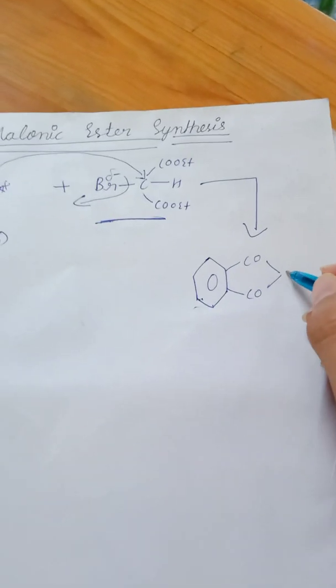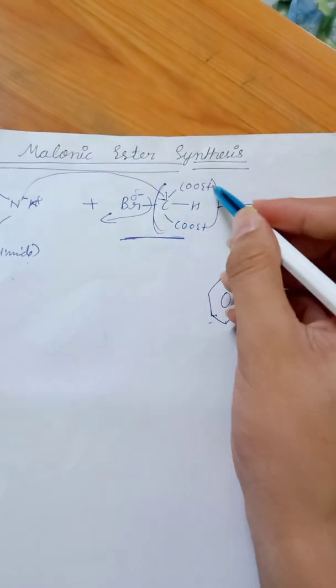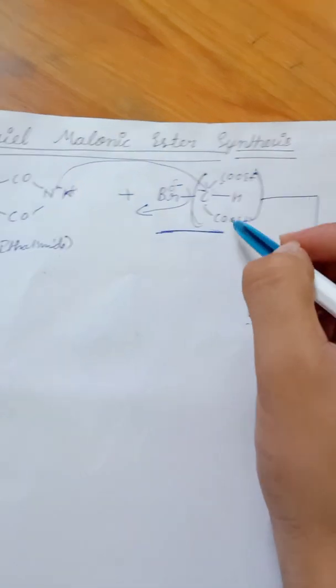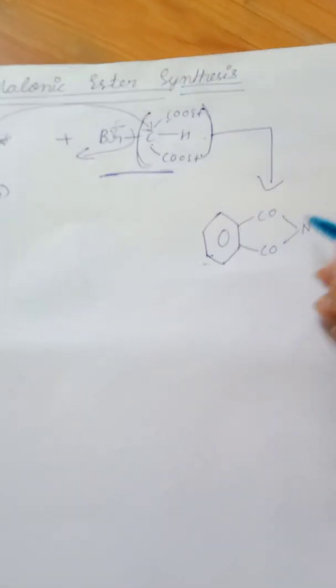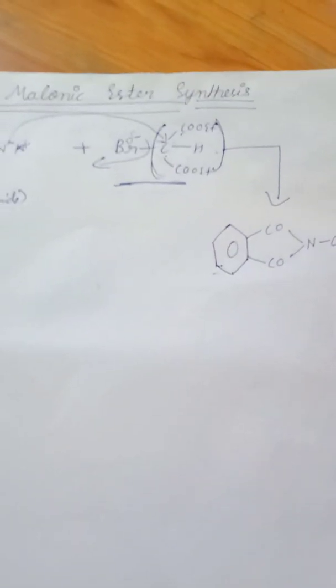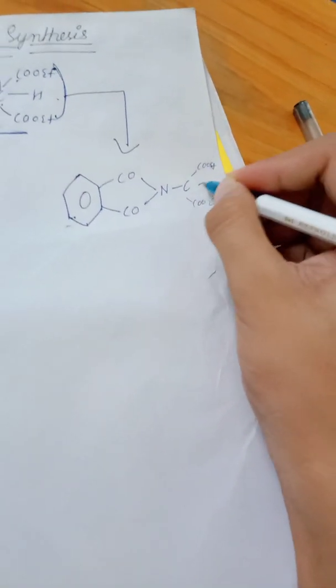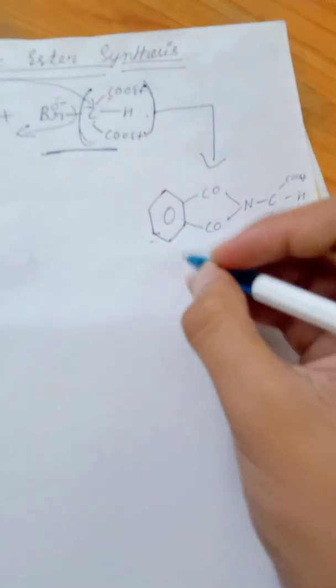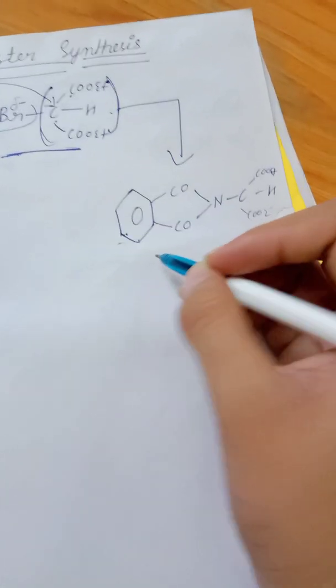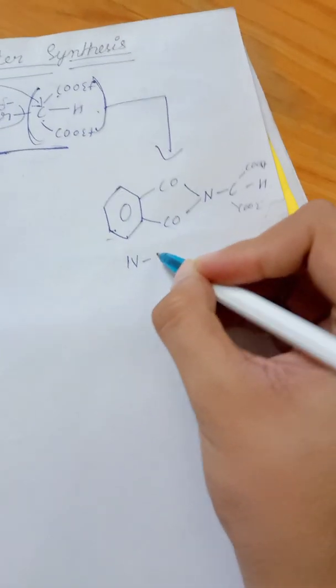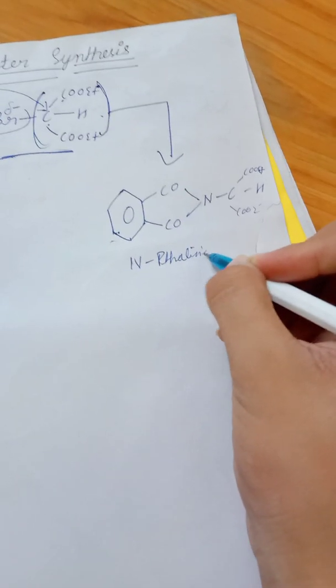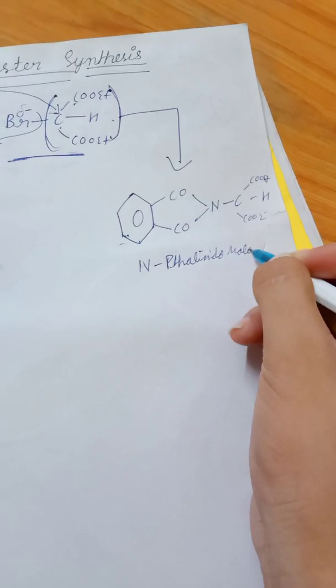Here what will happen is the remaining group, which is COOC2H5, COOC2H5, and H will attach here. So now what is the name of this product? It is basically N-phthalimidomalonic ester.